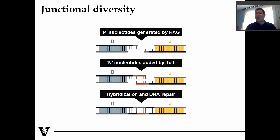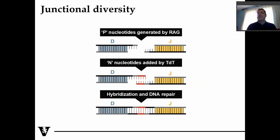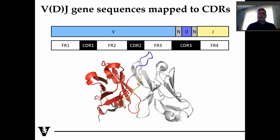This is further refined by junctional diversity. The process of combining these different gene fragments is not perfect — there's a little bit of noise in where they overlap. As you combine these fragments, non-templated nucleotides are added to the junction, creating amino acid variability at that particular junction. This junctional diversity happens specifically within the CDR3, which tends to be the most variable of the CDRs, and also reflects variability with the D gene for the heavy chains.